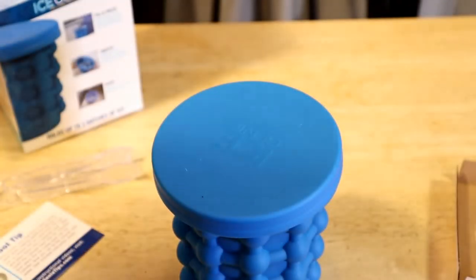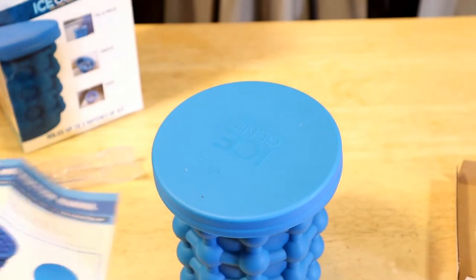Alright, so IceGenieTips.com. All you have to do is, they give you little instructions with pictures, which is great. So step one, or no, no, no. Okay, so components: You have the cylinder, the chamber, and the lid. So step one, insert the cylinder into the bottom of the chamber, which has already happened.